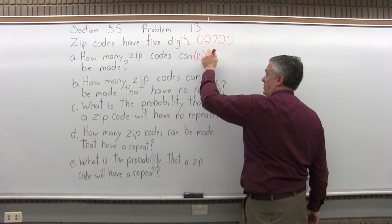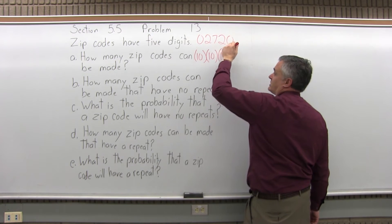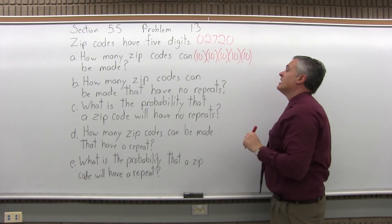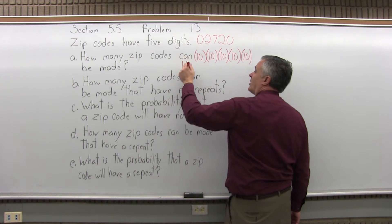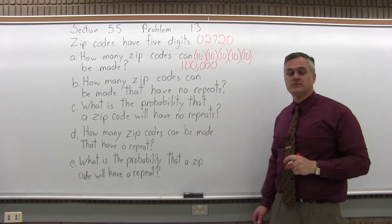For the second digit, you also have ten choices. Ten choices for the third digit, ten choices for the fourth digit, and ten choices for the fifth digit. And if you multiply that out, you would have a one with five zeros after it, or 100,000. So there are 100,000 different zip codes that are possible. That's quite a few.